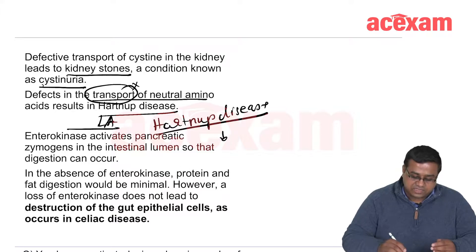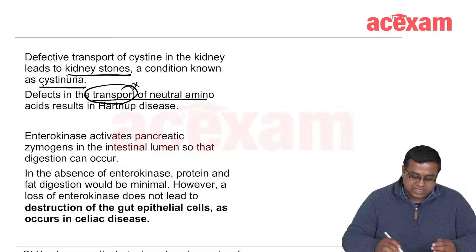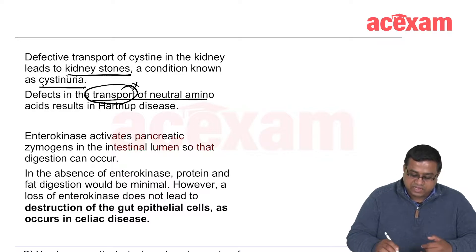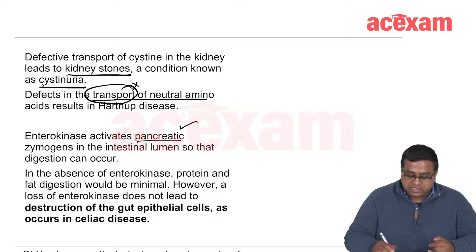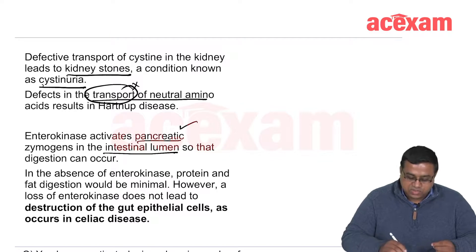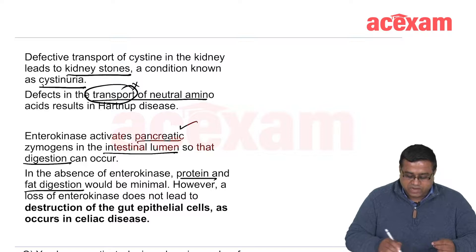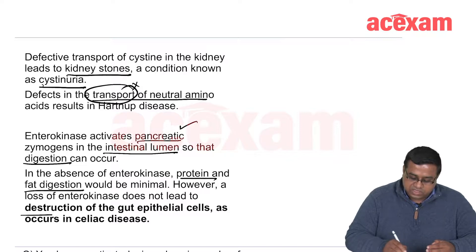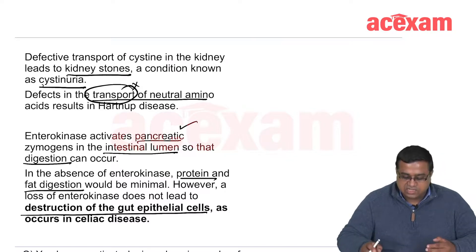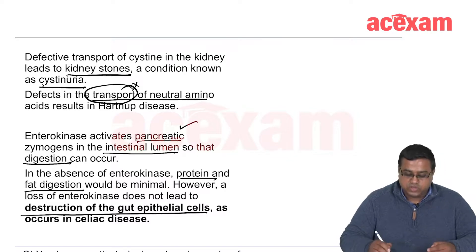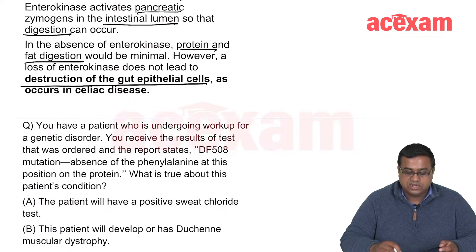Enterokinase is secreted from the intestinal glands and helps in digestion. Absence of enterokinase leads to protein and fat malabsorption, but it does not cause destruction of gut epithelial cells. So for the celiac disease question, the correct answer is gluten hypersensitivity, not enterokinase defect.